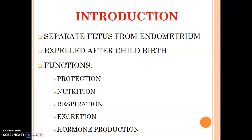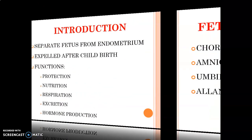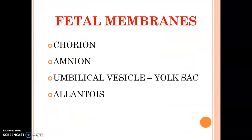The placenta also handles excretion of waste from the fetus to maternal blood, and produces hormones such as progesterone, human placental lactogen, and human chorionic gonadotropin hormone, which are able to support the developing fetus.